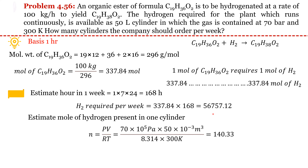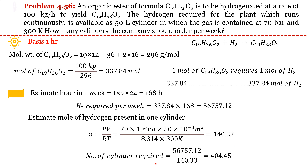Total moles of H2 required per week = 56,757.12. Dividing by moles of H2 per cylinder (140.33): number of cylinders = 56,757.12 / 140.33 = 404.45. Rounding up, the company should order 405 cylinders per week.